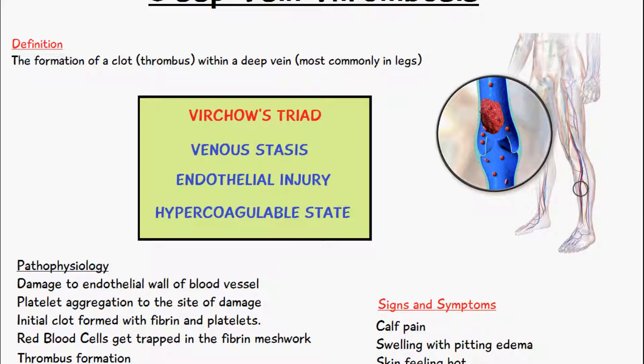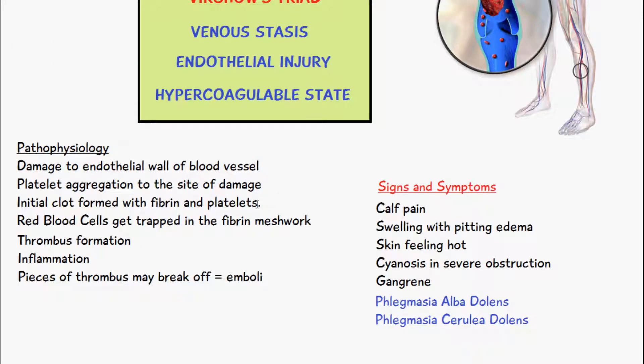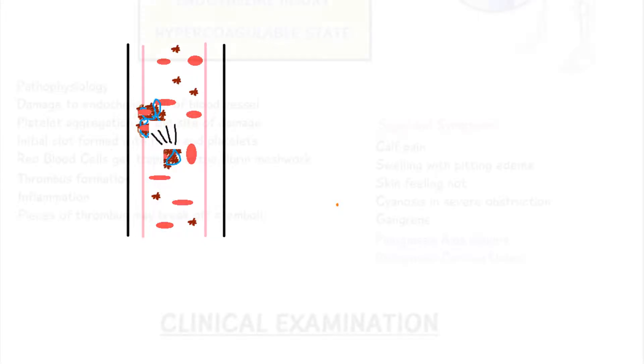When we talk about the pathophysiology of deep vein thrombosis — just to summarize — we have some kind of damage to the endothelial wall of a blood vessel, platelets aggregate to the site of damage, and the initial blood clot is formed with fibrin. Red blood cells come and get trapped in the fibrin meshwork, forming the thrombus. It may also cause an inflammatory response, and pieces of the thrombus may break off and travel in the bloodstream elsewhere, which is when we have emboli formation.